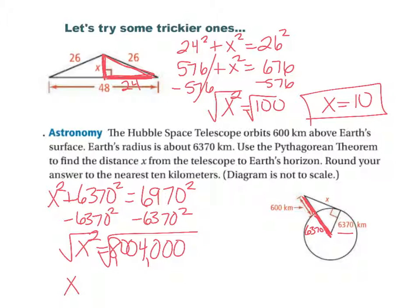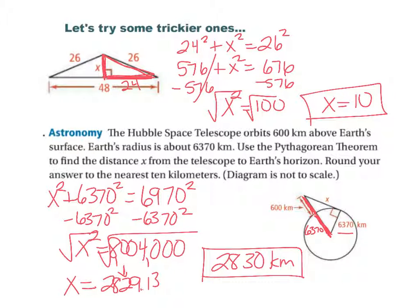Okay, so now what I have, that distance from the telescope to the horizon, I have 2829.13, but we've got to be careful with our rounding. You know how picky math is, so it says round your answer to the nearest 10 kilometers. Well here's the tens place right here at that 2, but the 9 would round it up, so I would say 2830 kilometers after I got it rounded.